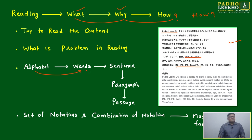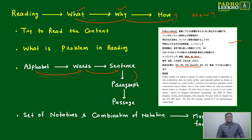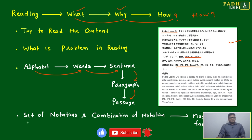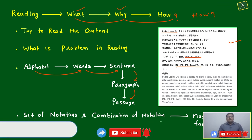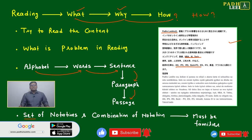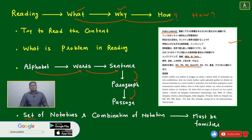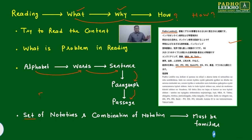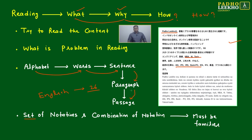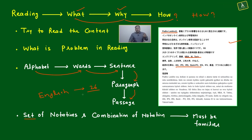We must know the alphabets. Words make sentences, sentences make paragraphs, and paragraphs make the passage. If we don't know the set of notations and their combinations, we will not be able to read. So for your CAT exam, don't read any other set of notations — only read English, which is what's going to help you.